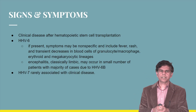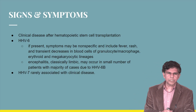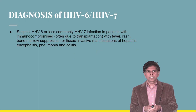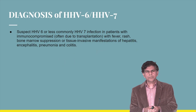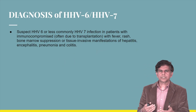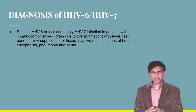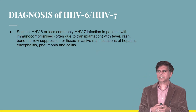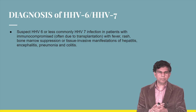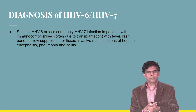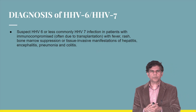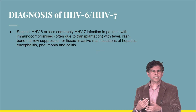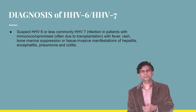Encephalitis — classically limbic — can occur in a small number of patients due to HHV-6B. HHV-7 is rarely associated with clinical disease. Diagnosis is mainly by clinical examination and history. In immunocompromised patients, suspect HHV-6 or HHV-7 infection when you see fever, rash, or bone marrow suppression, as tissue-invasive manifestations can include hepatitis, encephalitis, pneumonia, and colitis.